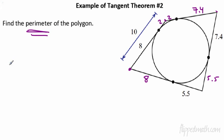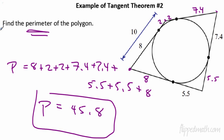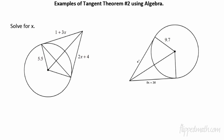They want the perimeter. Remember, perimeter is all the way around the outside. So the perimeter is going to equal, here we go: we get an 8 plus 2 plus 2 plus 7.4 plus 7.4, see how this is going? 5.5 plus 5.5 plus another 8. Add them all together. What do you get? Perimeter is going to equal 45.8. That's easy enough.